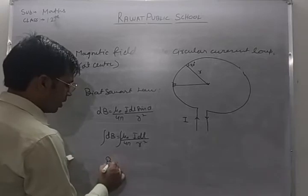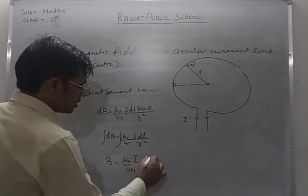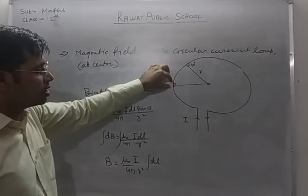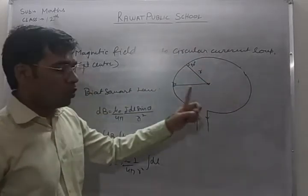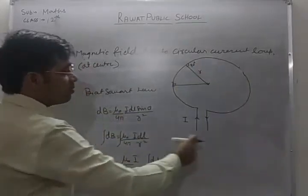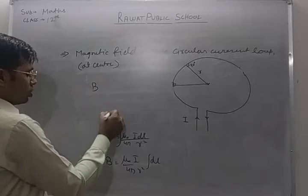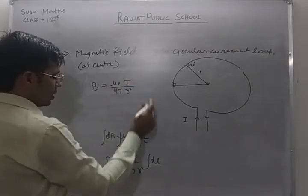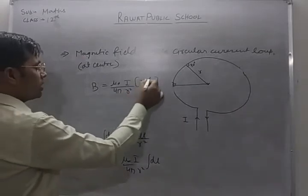On integrating: B = μ₀/4π · I/r² · ∫dl. Here μ₀, 4π, I, and r² are all constants. We need to integrate dL over the entire circular loop. The total length is the circumference of the circular loop, so ∫dl = 2πR. Therefore: B = μ₀/4π · I/r² · 2πR.